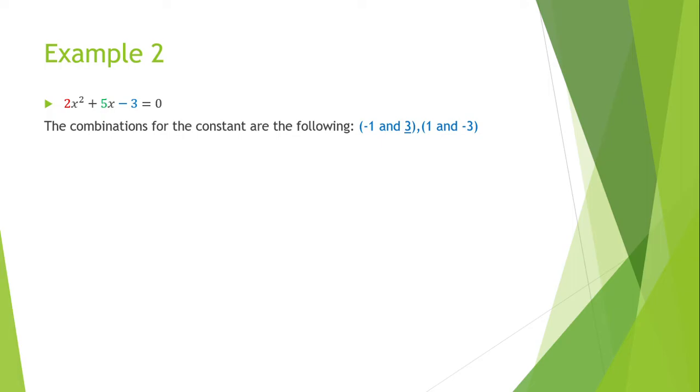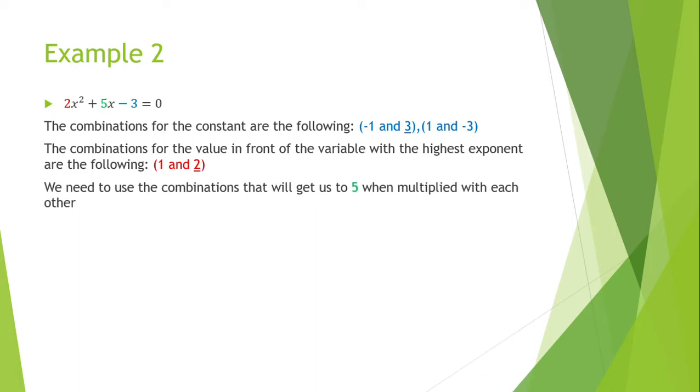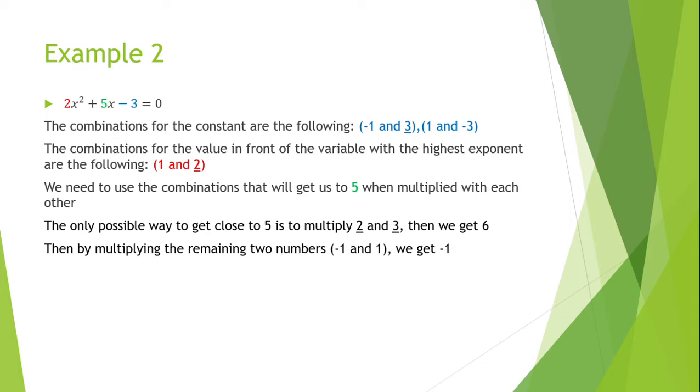The combinations for the constant are the following: minus 1 and 3, 1 and minus 3. The combinations for the value in front of the variable with the highest exponent are the following: 1 and 2. We need to use the combinations that will get us to 5 when multiplied with each other. The only possible way to get close to 5 is to multiply 2 and 3. Then we get 6. Then, by multiplying the remaining two numbers, minus 1 and 1, we get minus 1. And adding this to the 6, it gets us to 5.